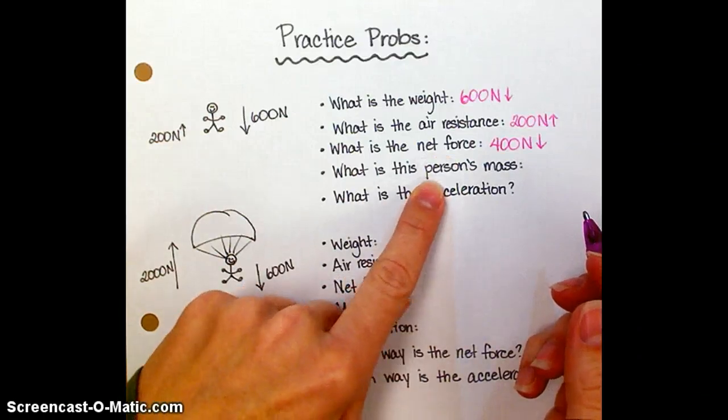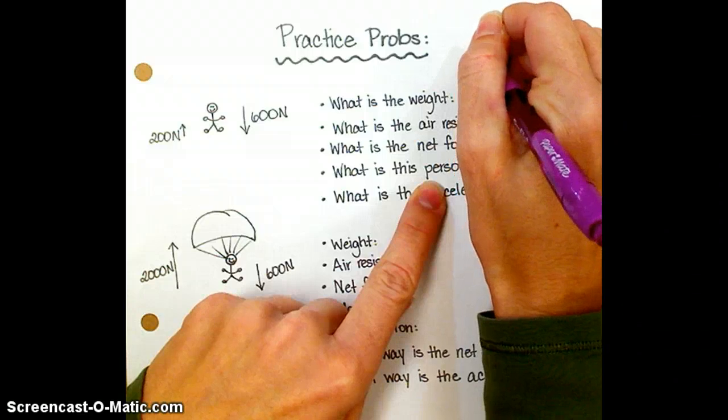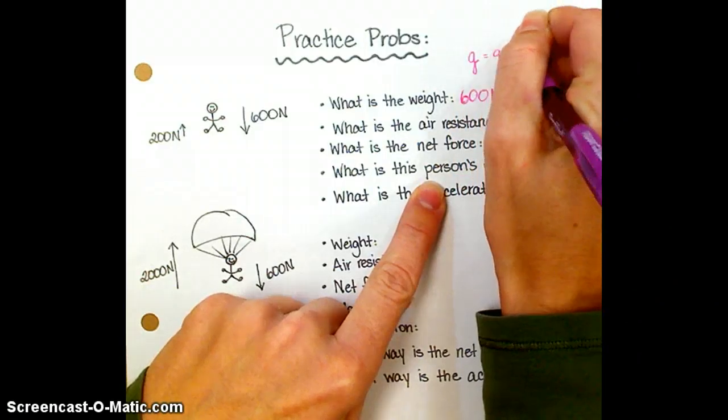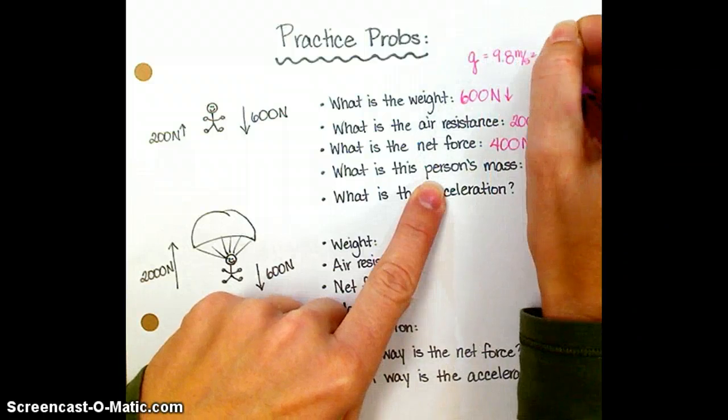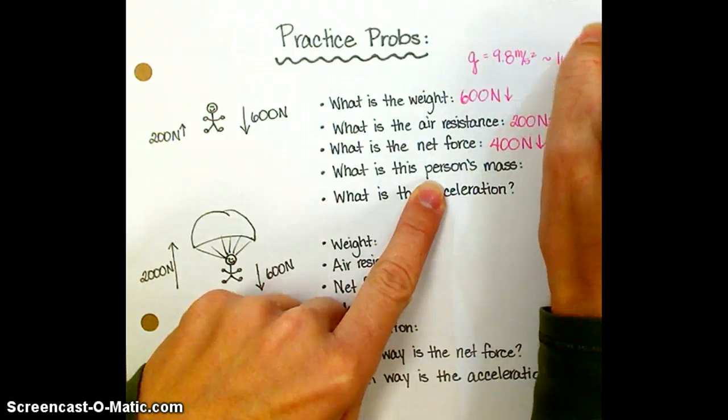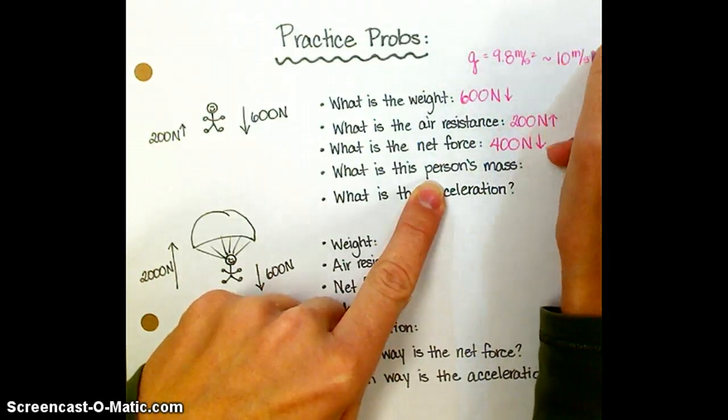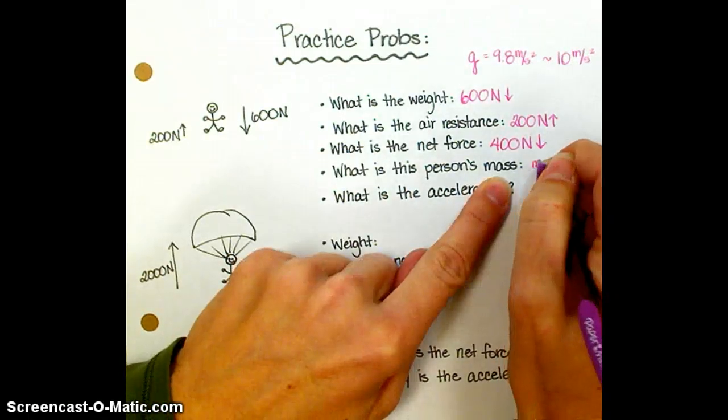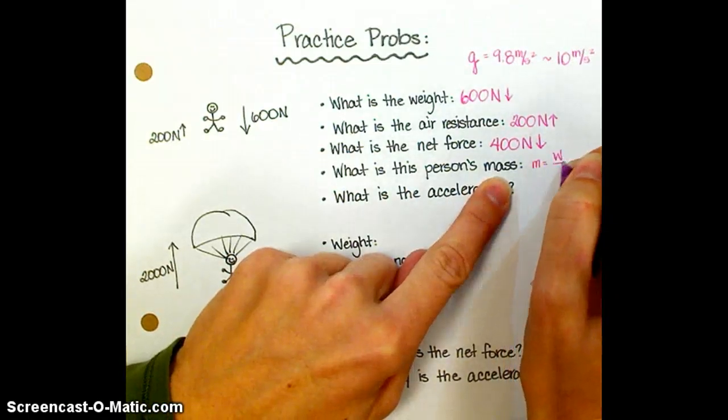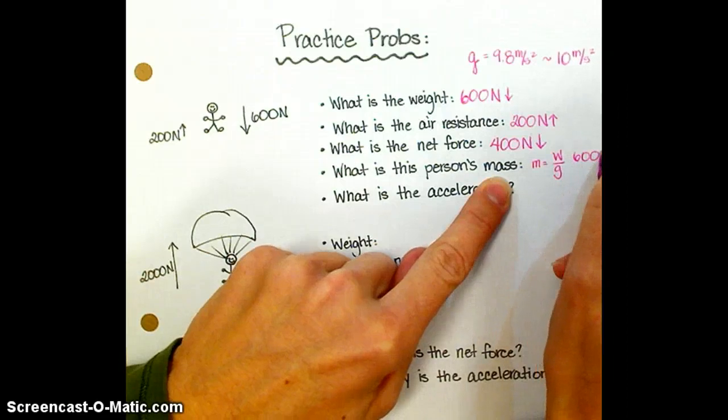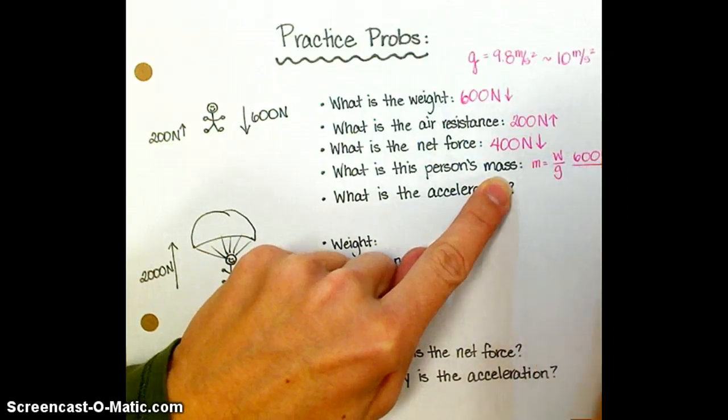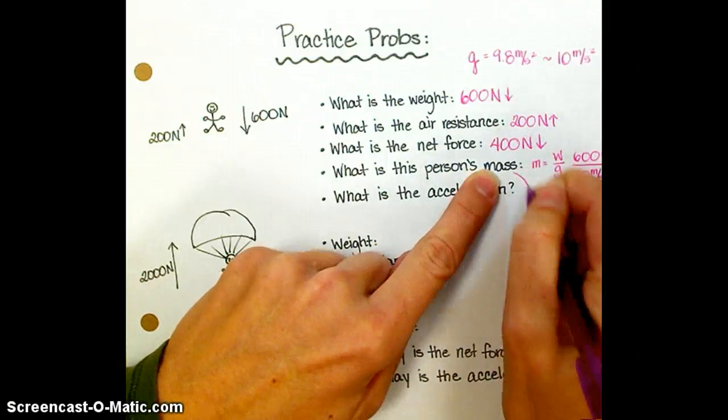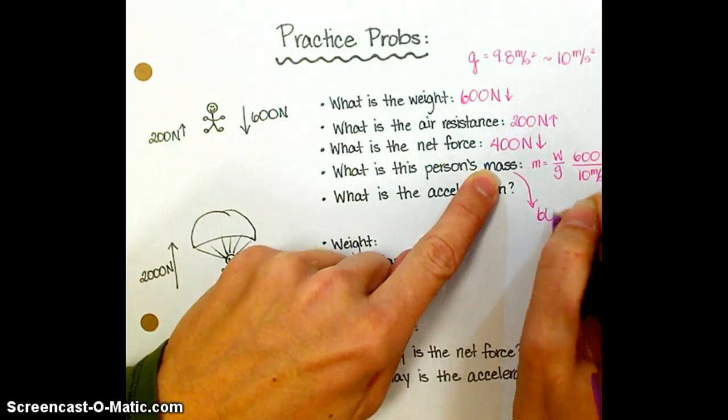What is the person's mass? Well, acceleration due to gravity is 9.8 meters per second squared, but we're going to say that's approximately 10 just so we can do this calculation easily in our head. The person's mass—mass is weight divided by gravity—that's going to be 600 newtons divided by 10, which gives us a mass of 60 kilograms.